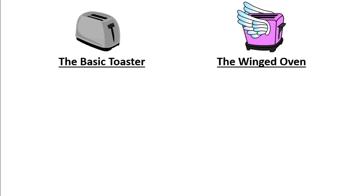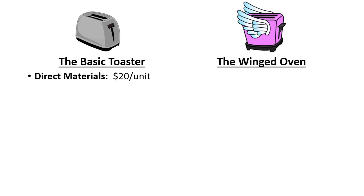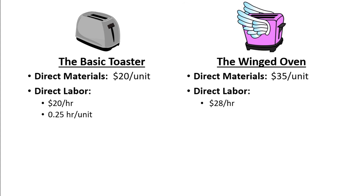Let's say that my company manufactures two toasters. The first one we call the Basic Toaster, which has nothing flashy but gets the job done. The second one we call the Winged Oven, which will fly your toast right to your table — equipped with state-of-the-art high-tech heating elements. The direct materials are $20 per unit for the Basic Toaster and $35 each for the Winged Oven. The direct labor averages at $20 per hour for the Basic Toaster; however, only the most skilled craftsmen work on the Winged Oven, making its direct labor cost per hour $28. It takes 0.25 hours to produce a Basic Toaster and 0.5 hours to produce one Winged Oven.